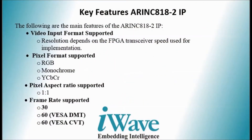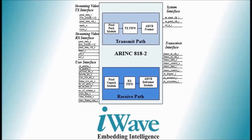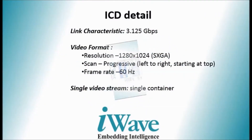Here are the key features of the ARINC 818 IP core. Now we have the block diagram of the ARINC 818 IP core. Here are the ICD details for the demonstration: link characteristics at 3.125 Gbps interface, video format with SXGA resolution, progressive scanning, and frame rate of 60 Hz.